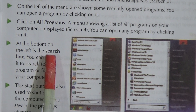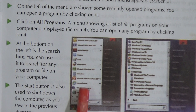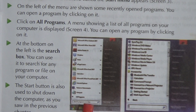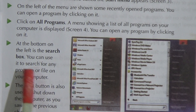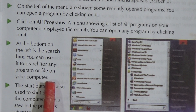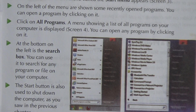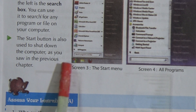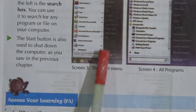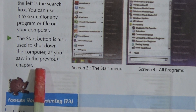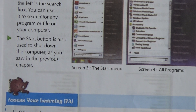At the bottom on the left is the search box. You can use it to search for any program or file on your computer. The start button is also used to shut down the computer. As you learned in the previous chapter, you can turn the computer on and off, and you can also shut down the computer from the start menu.